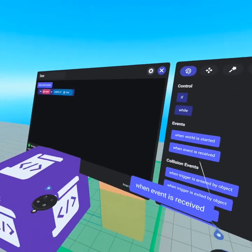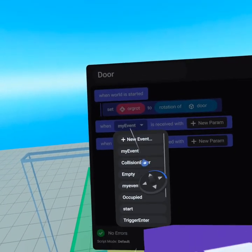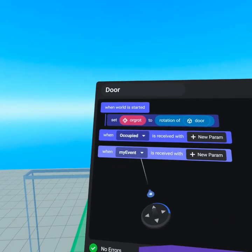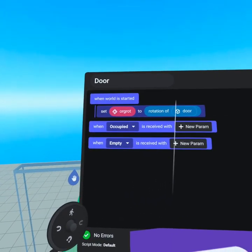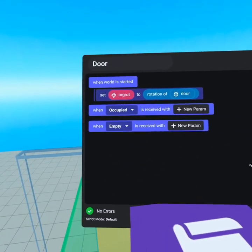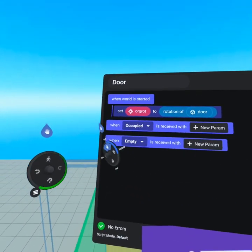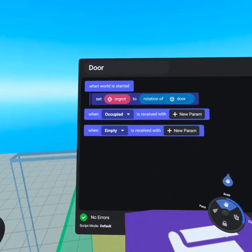If we go to when event is received, we can drop two of these in here. Click on the my event drop down, grab occupied, and under the other one grab empty. These fire one time when the player first enters and one time when the entire trigger is empty. If you have one player enter, it'll go off when that first player enters and won't go off until all players have exited.